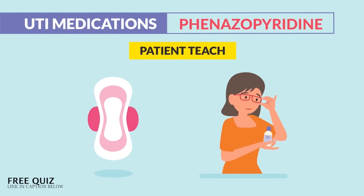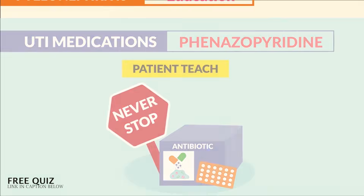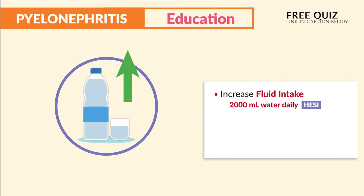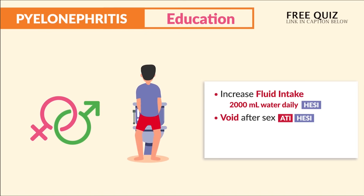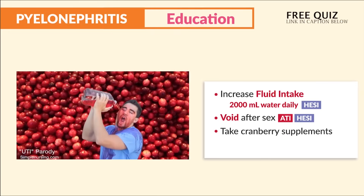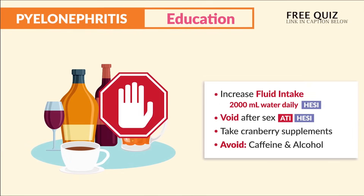Also teach patients to never stop antibiotic therapy, even when starting to feel better. For patient education — always a big topic for select-all-that-apply questions — increase fluid intake to flush out the infection. Hesse mentions 2,000 mL of water per day. Void after sex to flush out bacteria, as mentioned by ATI and Hesse. Take cranberry supplements to acidify the urine, and avoid caffeine and alcohol, which may also make urine acidic.